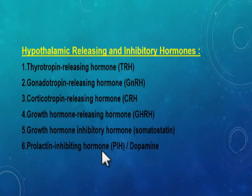The hypothalamic releasing and inhibitory hormones total six: four are releasing hormones and two are inhibitory hormones. The four releasing hormones are thyrotropin-releasing hormone, gonadotropin-releasing hormone, corticotropin-releasing hormone, and growth hormone-releasing hormone. The two inhibitory hormones are growth hormone inhibitory hormone — also known as somatostatin — and prolactin inhibitory hormone — also known as dopamine. This is important for viva examinations.